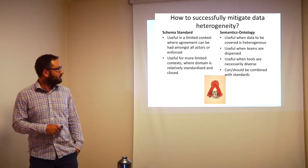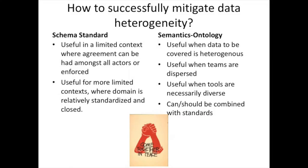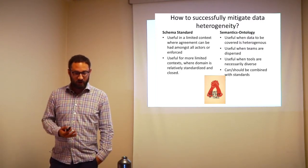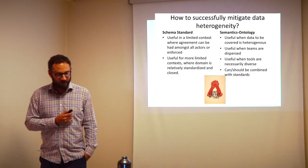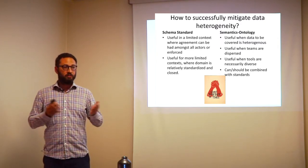What are the main ways to successfully try to mitigate data heterogeneity? There's more than one way. The main ways are schema standards and semantics or ontology. A schema standard says: if you're working in this domain — archivists, librarians, or museum professionals — we've gotten together and decided this is a good way of documenting X. These are good to adopt in a limited context where you can make agreement with the actors in question and get a political force behind to enforce that you will do things this way.